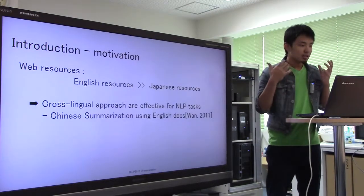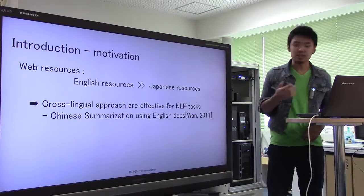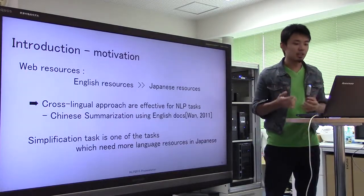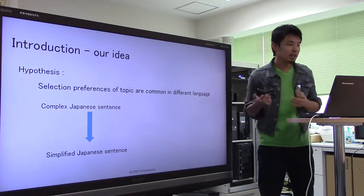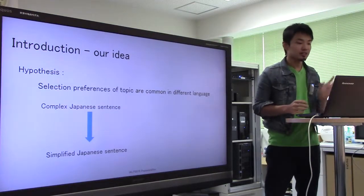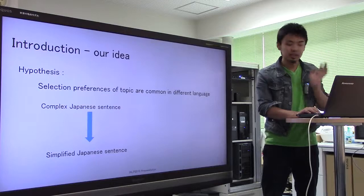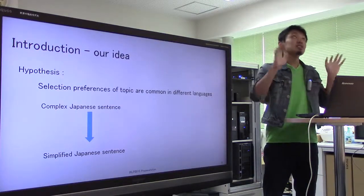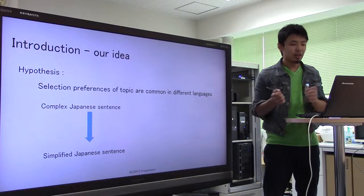For example, one approach in 2011 proposed a method of Chinese summarization using English documents. In this research, we focus on simplification tasks, which need more language resources in Japanese. Our main idea is this: selection preferences of a topic are common in different languages. In other words, when we compress or simplify Japanese sentences, there is some process we can do the same as for English sentences, such as deleting some topics to make shorter sentences. For example, supposing you tell somebody about an entertainer, you could mention the TV program in which he appeared, rather than where he is from.